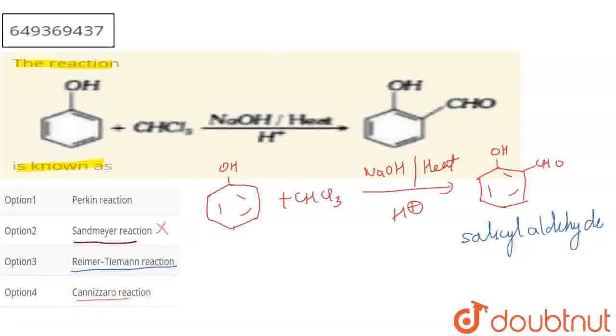We have a system with alpha-hydrogens. We take two moles and add concentrated alkali. It is not Cannizzaro reaction and not Perkin reaction. So option three is correct.